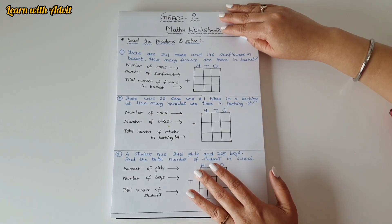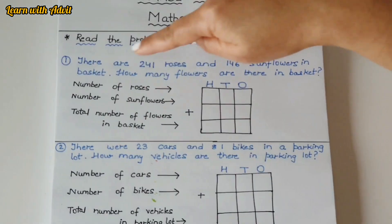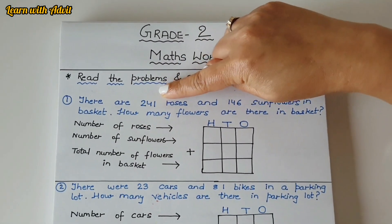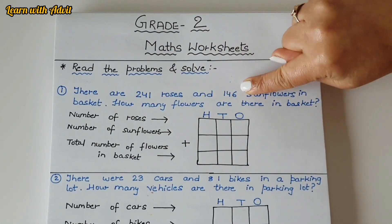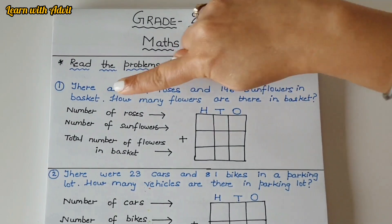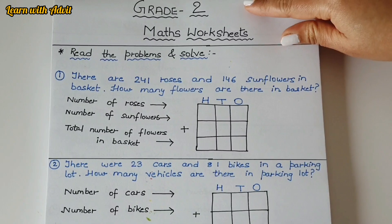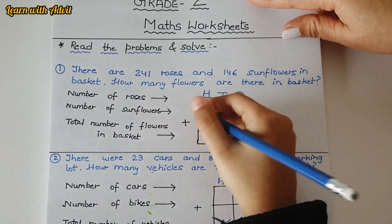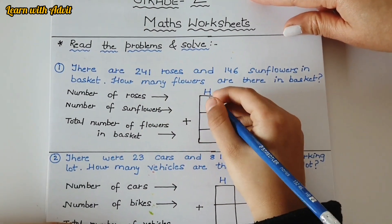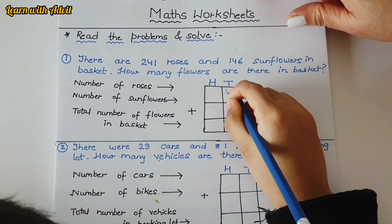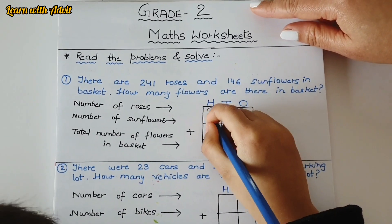The question is: There are 241 roses and 146 sunflowers in a basket. How many flowers are there in basket?